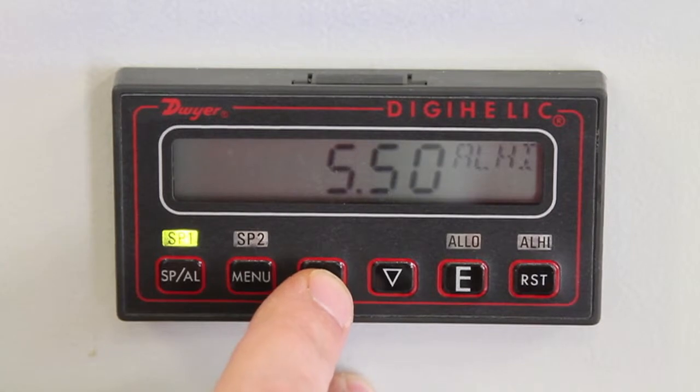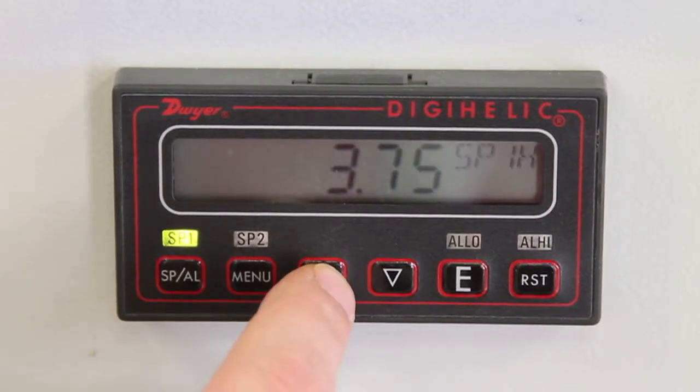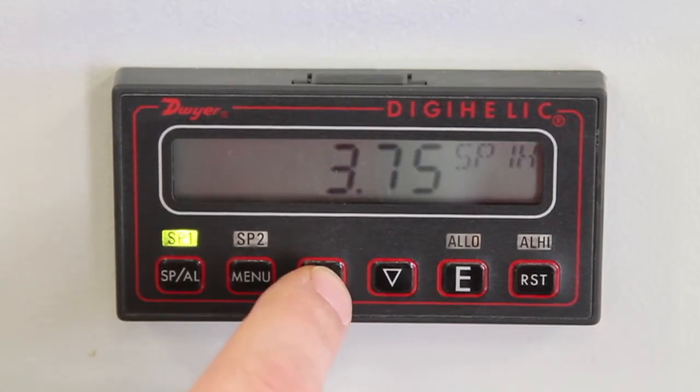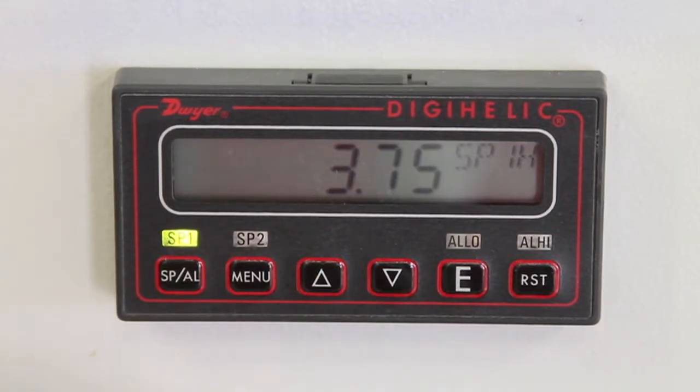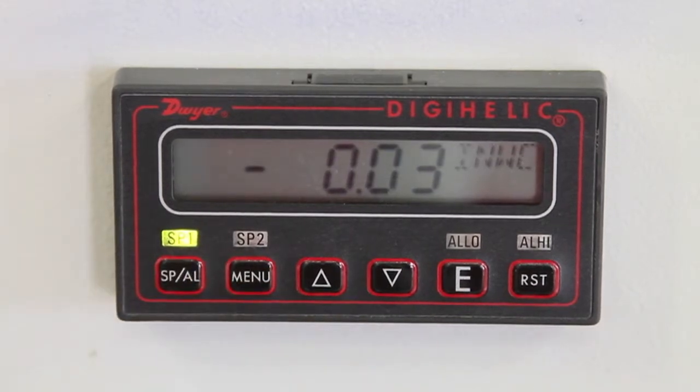We may arrow up or down to get to our SPALARM HIGH and our SP1H, which would be our high set point. To exit this menu, press the menu and it will display actual static pressure.